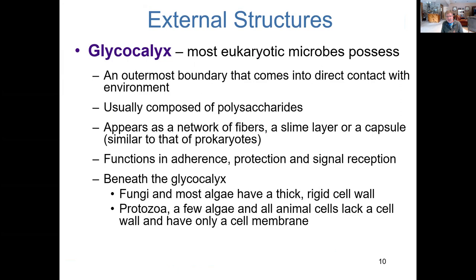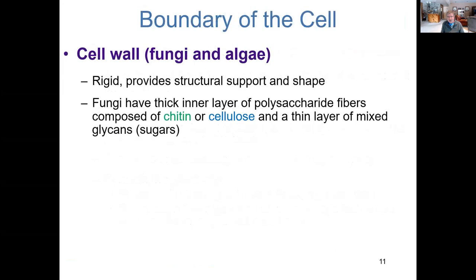The eukaryotic cell wall does lie external to the cell membrane and has similar functions — providing structural rigidity and regulating what comes in and out. But instead of having peptidoglycan as in prokaryotes, you have a layer of polysaccharide in the form of glucose bonded together to compose what is called chitin or cellulose.